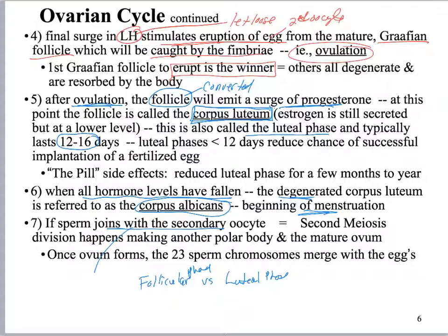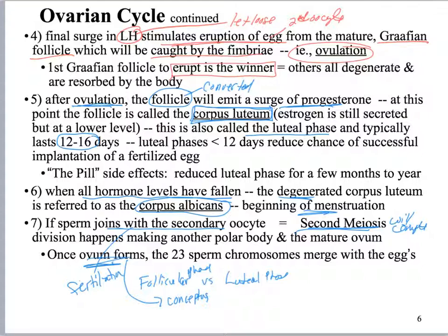If sperm joins the secondary oocyte and fertilization occurs, then meiosis 2 will complete and for a split second you will have an ovum, but then the sperm's DNA merges with the DNA of the egg and you go right to the conceptus. You don't get ova hanging around the way you do sperm — they only last for a few seconds to a minute. If the sperm never unites with the secondary oocyte, you never get an ovum.